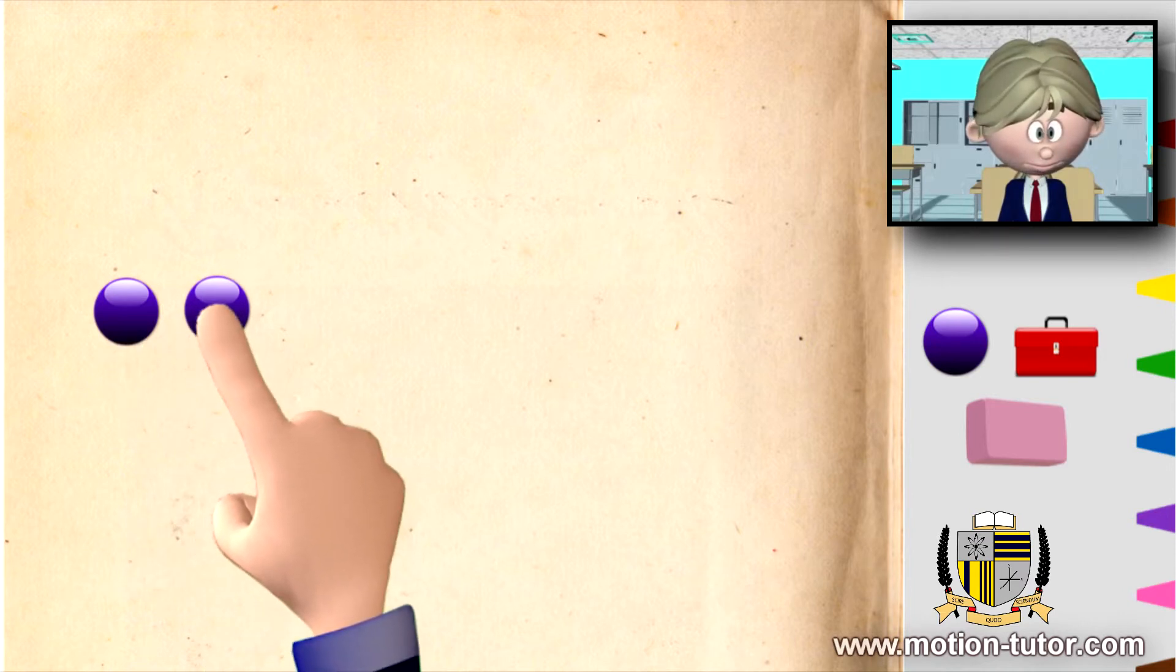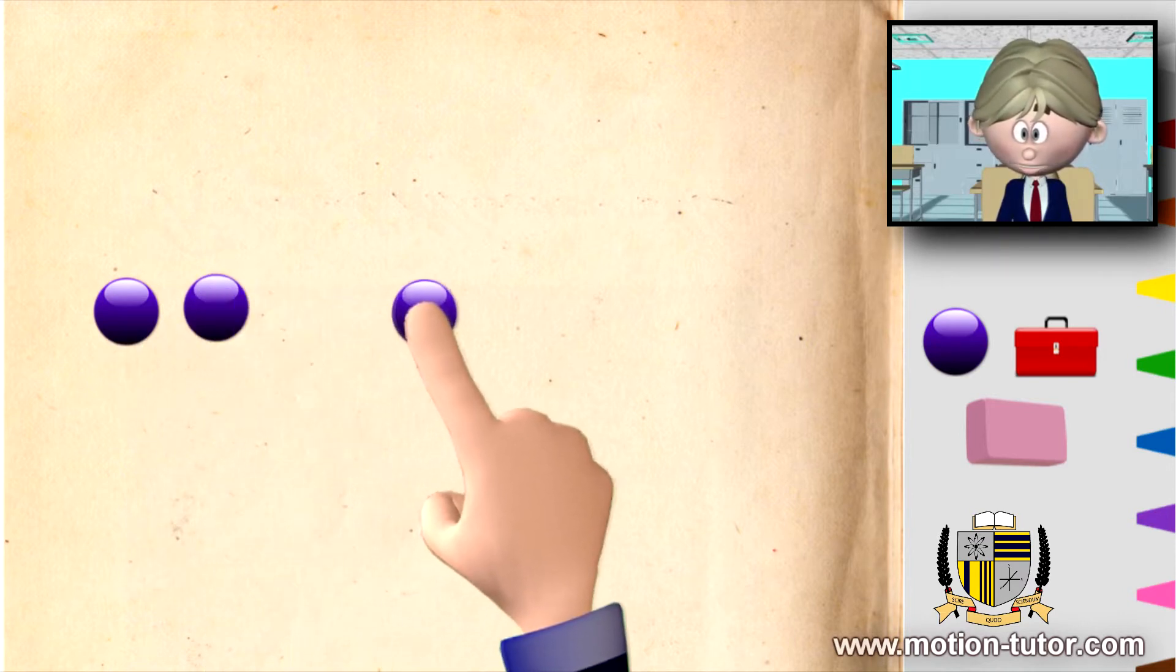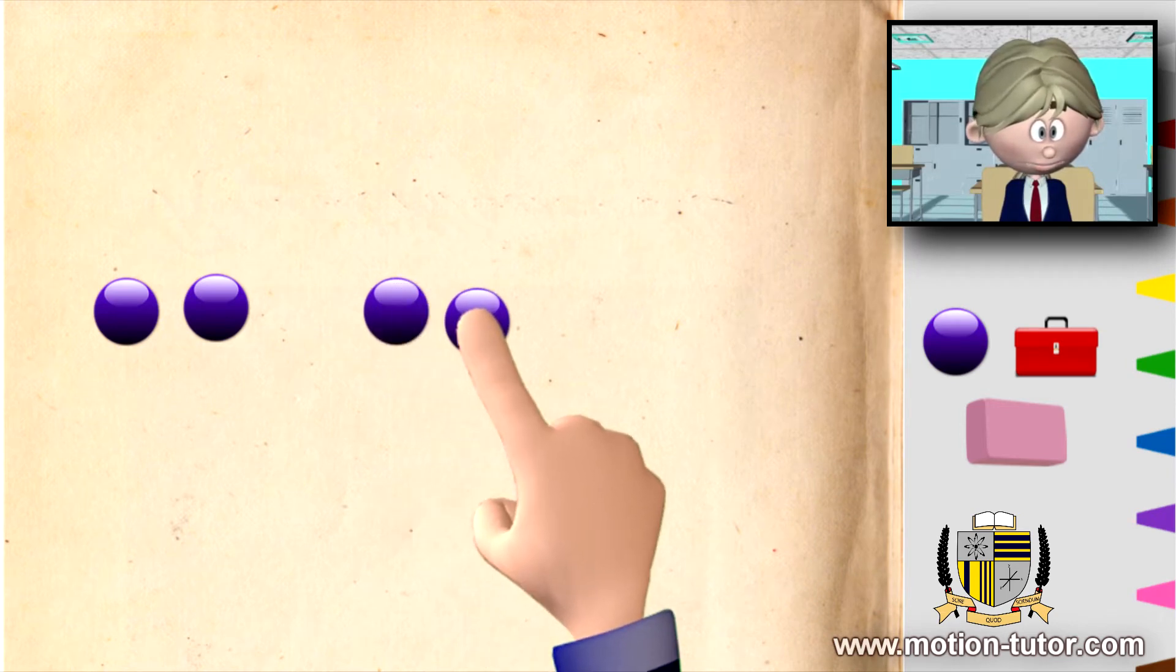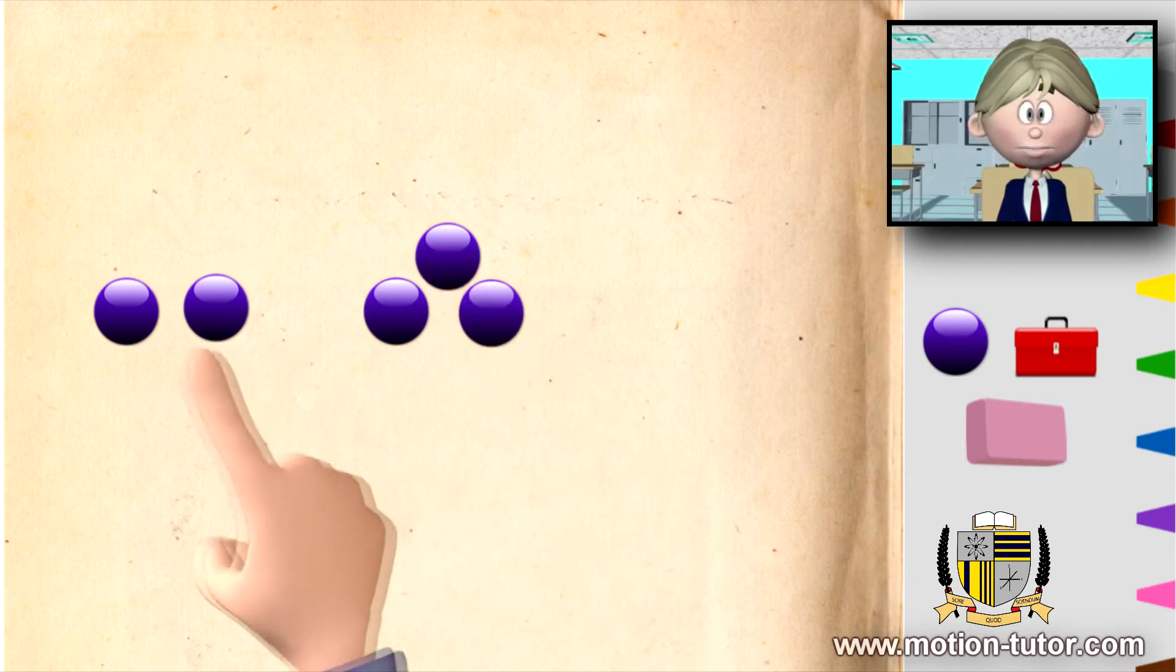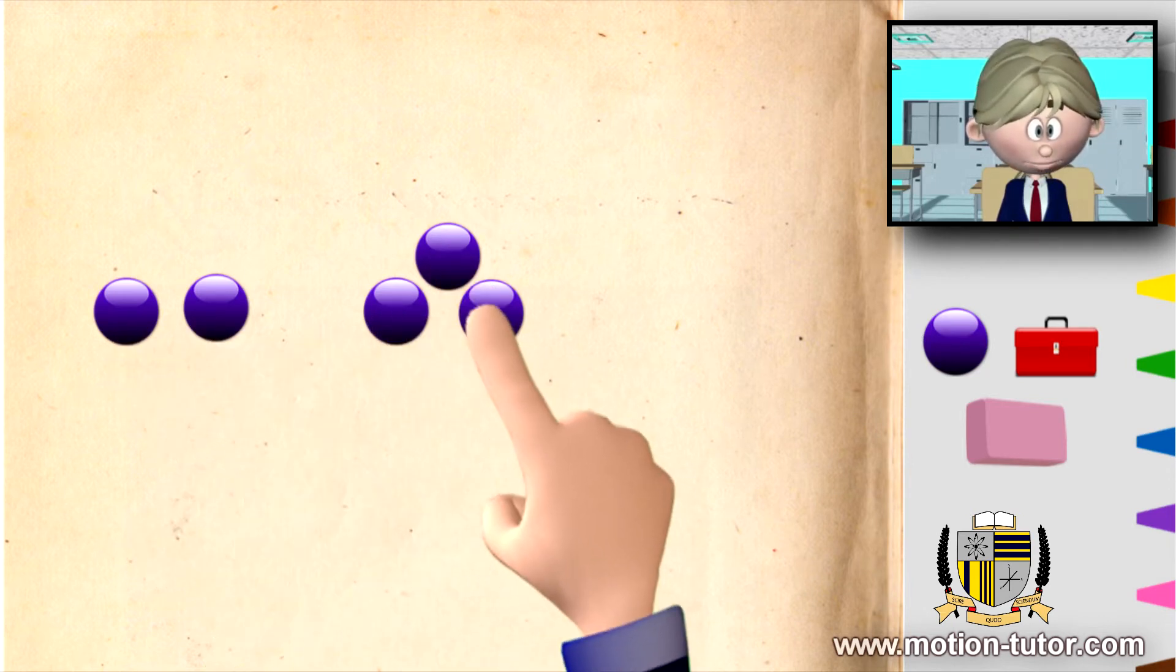One, two. And over here, I have one, two, three. Together, I have one, two, three, four, five.